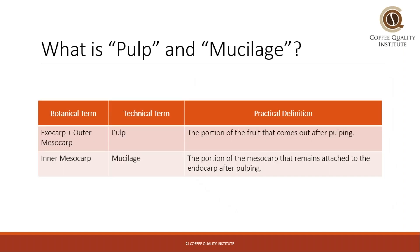When we're talking about the part of the fruit that's removed, the exocarp and the outer mesocarp are what we generally refer to as pulp. That's because the portion of the fruit that comes out when the fruit goes through a pulper is what we refer to as pulp.